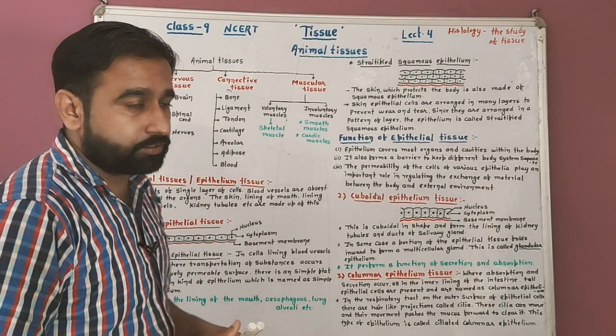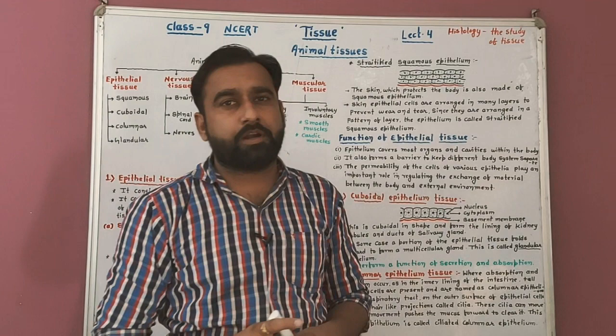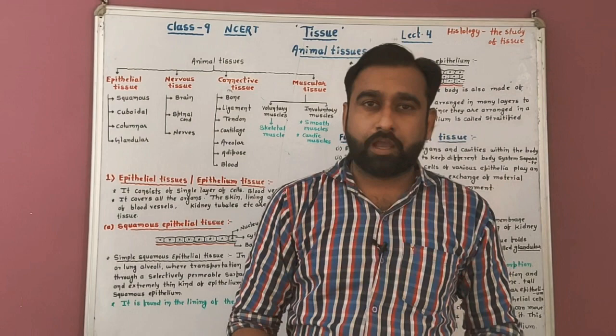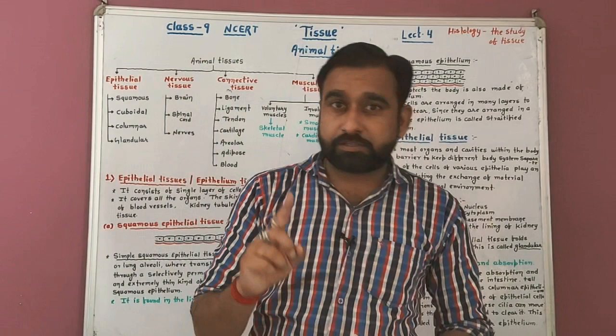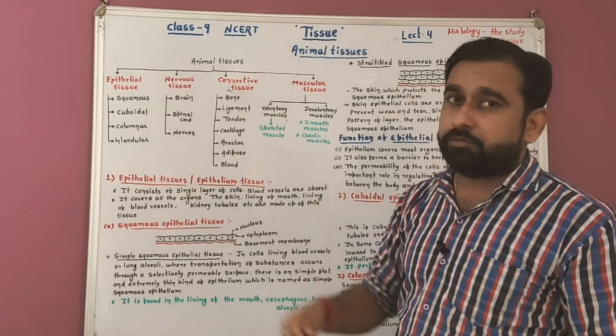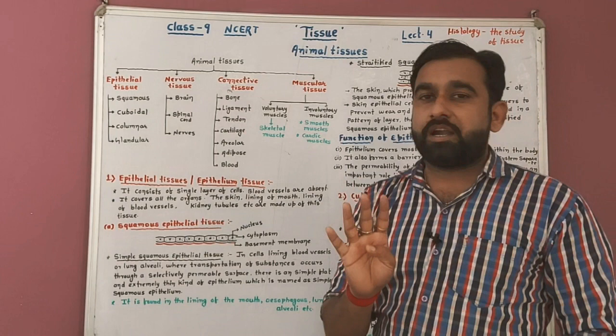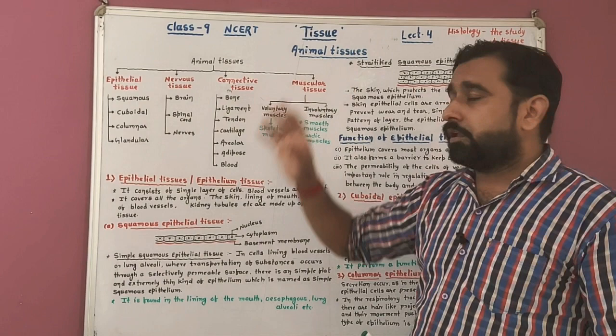Now we discuss animal tissue. First, we deal with the classification of animal tissue, then one by one we study all the kinds of tissues present in an animal body. Animal tissues are of four types: first, epithelial tissue; second, nervous tissue; third, connective tissue; and fourth, muscular tissue.